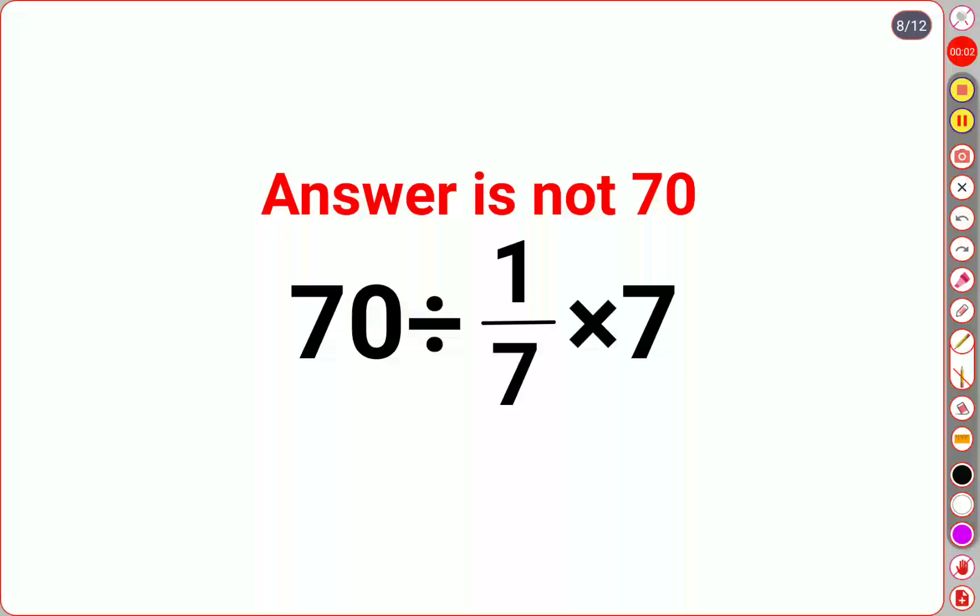Welcome everyone! So yes, a lot of people thought that the answer for this one is supposed to be 70 because this and this gets cancelled. We are left with 70 divided by 1, the answer for this one is supposed to be 70.